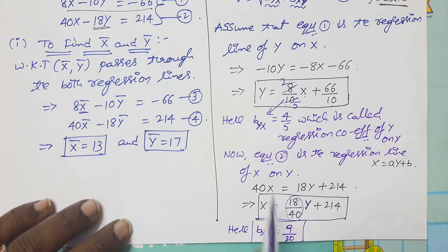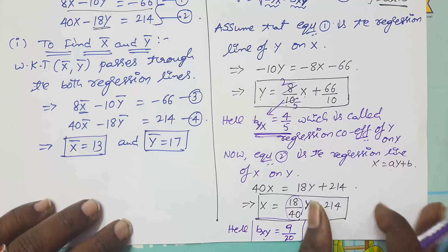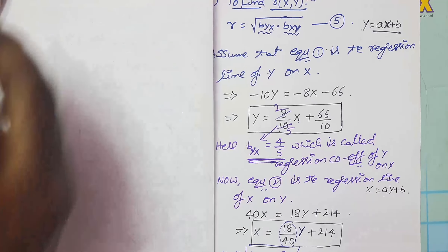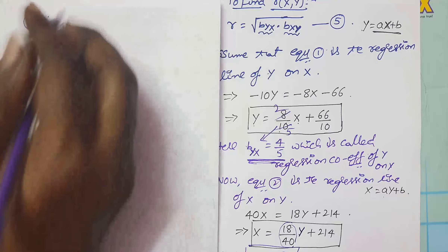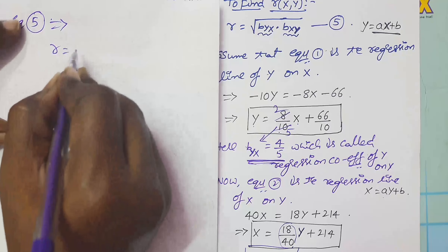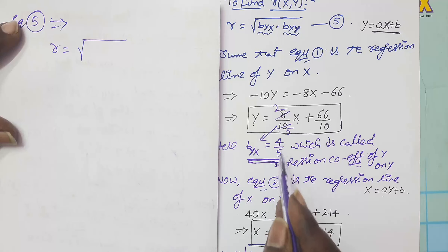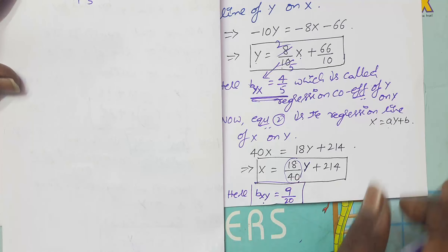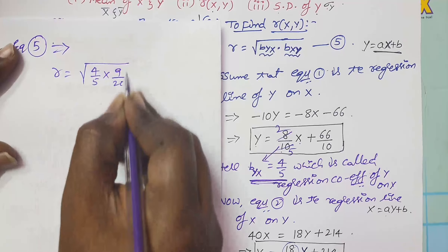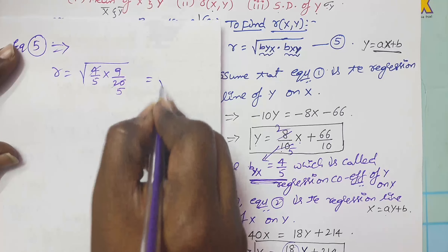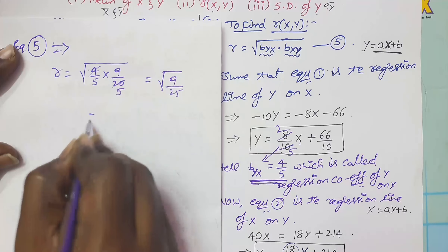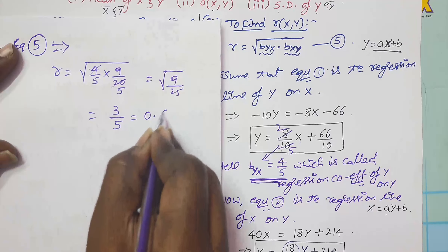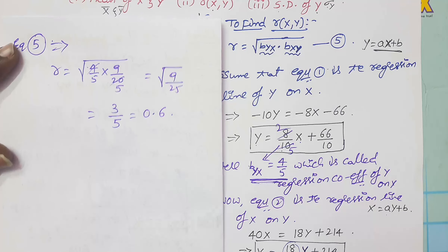Finally, substitute byx and bxy into the correlation coefficient formula: r equals square root of (byx times bxy) equals square root of (4/5 times 9/20) equals square root of (36/100) equals square root of (9/25) equals 3/5 equals 0.6.